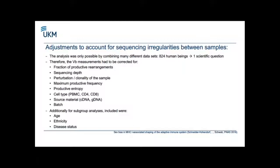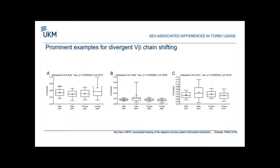We also had to adjust for age, ethnicity, and disease status where we could. The main result of our paper is that HLA influences your TCR repertoire — everyone knows that — but there are quite a few instances where the HLA in women influences your TCR repertoire in a divergent way compared to men. For example, men and women can both be HLA-A26 positive, but men will have less of a certain V-beta chain and women will have more, and there are many instances of these shifts.